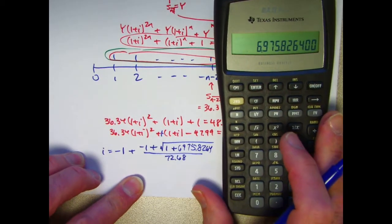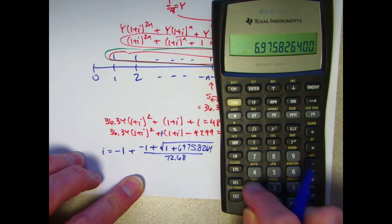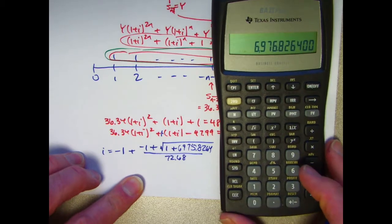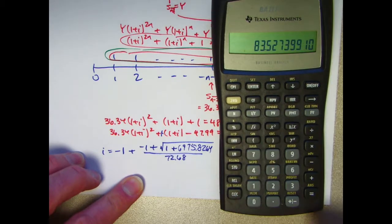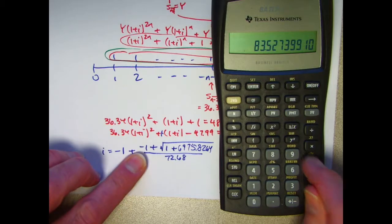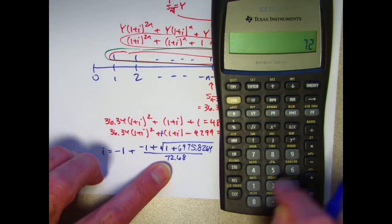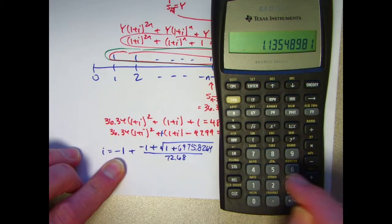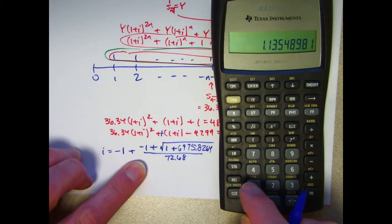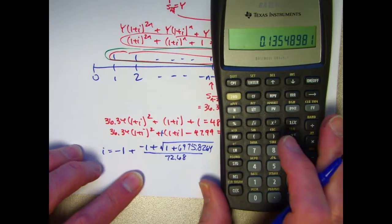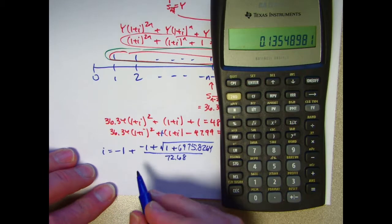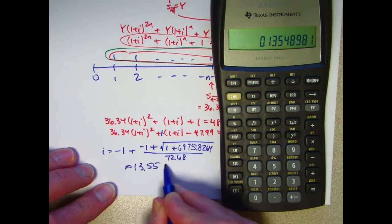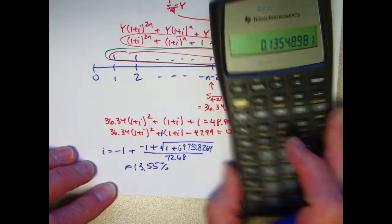Let's finish this off here. So I've got to add 1 to this, take the square root, subtract 1, divide by this, and then subtract 1 from that. And it's good that we took the plus square root there. Looks like i is about 13.5%, and that is the correct answer for part C of this problem.